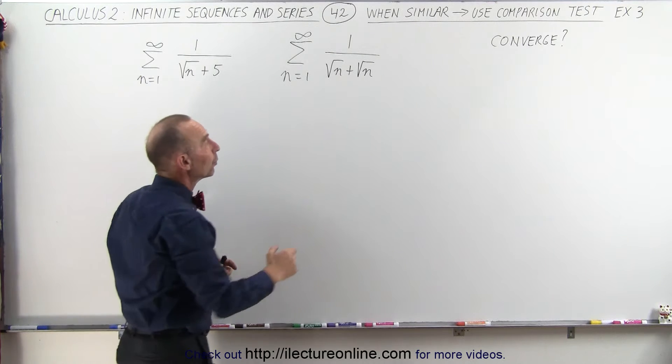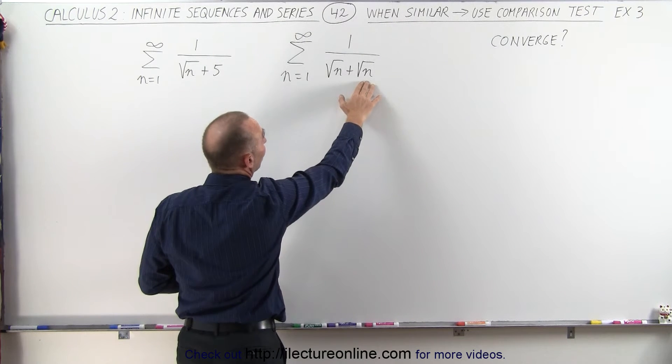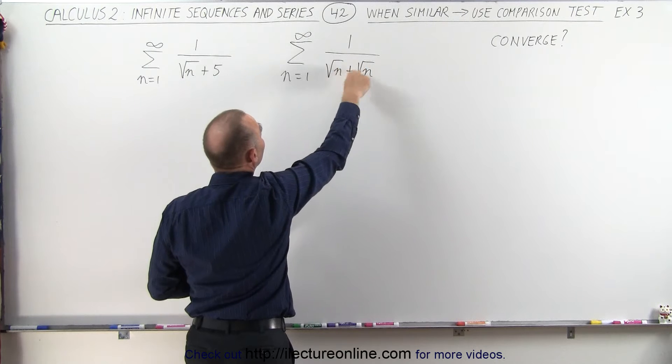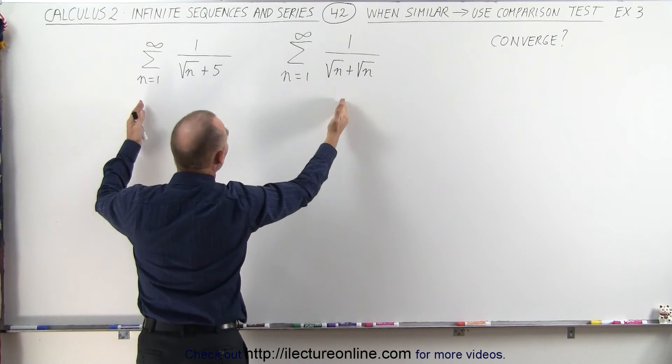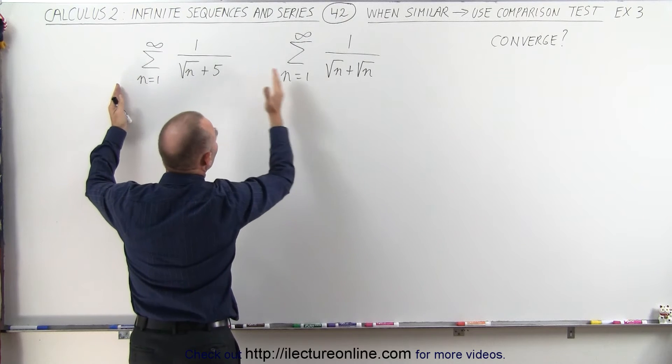So from the point on when n becomes 25 or larger than 25, this becomes a smaller quantity than this, so the infinite sum will be larger for this than it is for that.